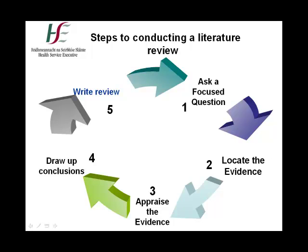There are typically five steps that form part of the literature review process. Step one is to ask a focused question. Devising a well-focused question is the first step in a literature search and will keep you on track with your search. Step two is to locate the evidence. It is important to know what resources are available and their content, scope and quality. The third step is to appraise the evidence. A list of useful resources are referenced at the end of the tutorial. By following this process, you will be in a position to complete the final stages, which are to draw up conclusions and finally write the review.